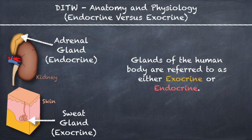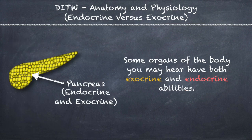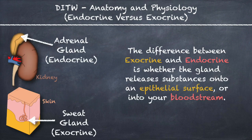Glands of the human body are referred to as either exocrine or endocrine. Some organs of the body have both exocrine and endocrine abilities. The difference between exocrine and endocrine is whether the gland releases substances onto an epithelial surface or into your bloodstream.